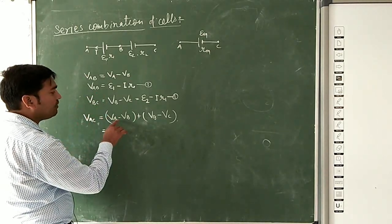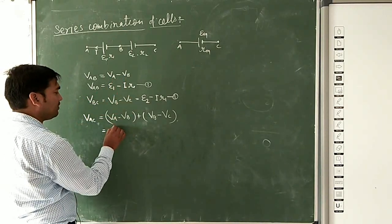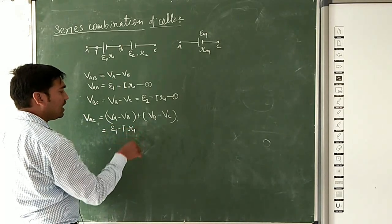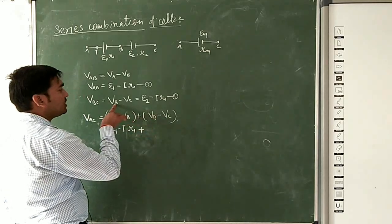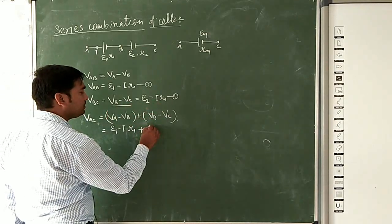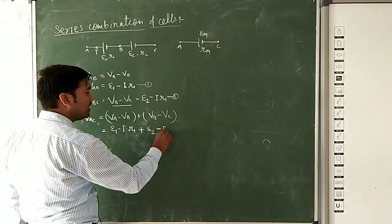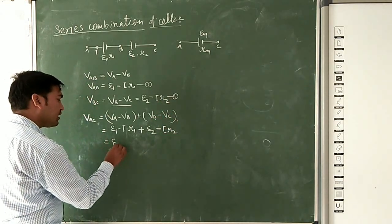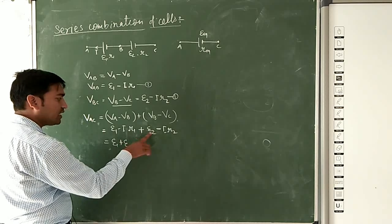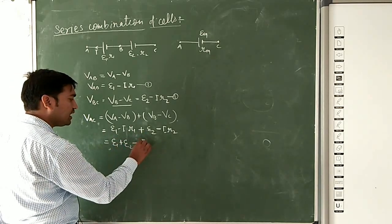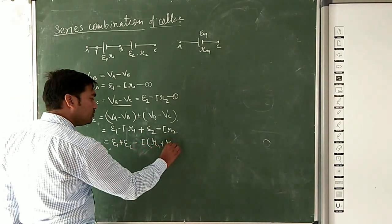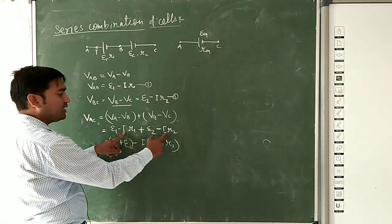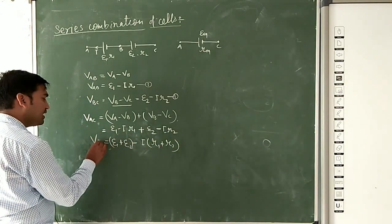From here, VA minus VB has the value E1 minus I·R1, plus VB minus VC which has the value E2 minus I·R2. Collecting the EMF terms: E1 plus E2, and taking I as common: minus I(R1 plus R2). This is the value of VAC.